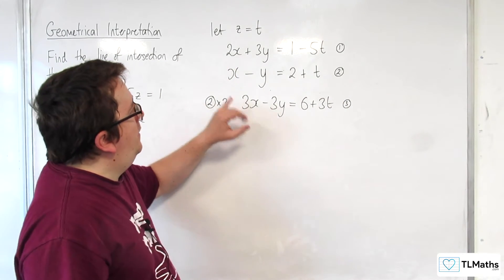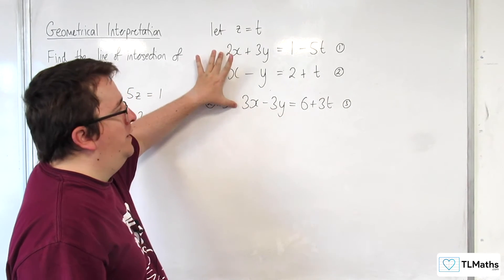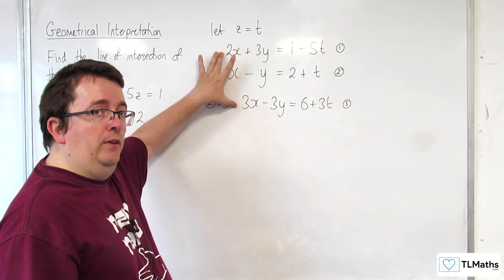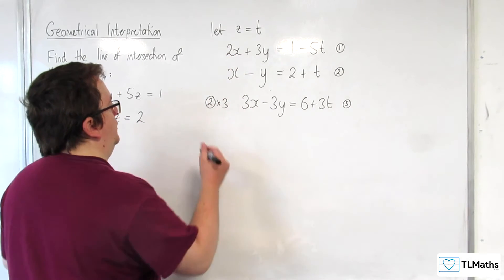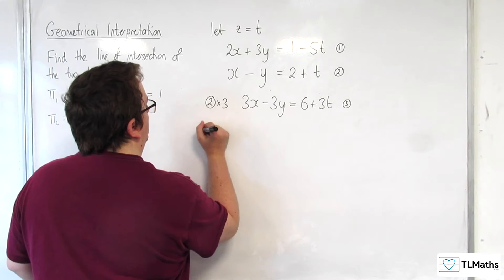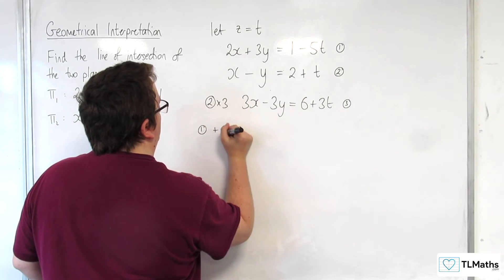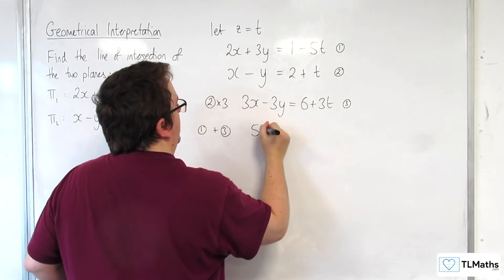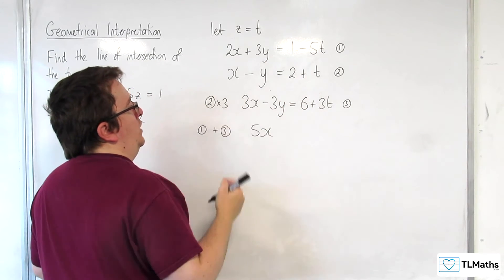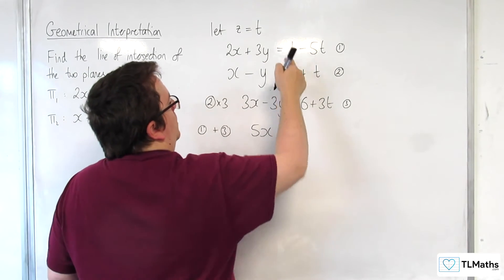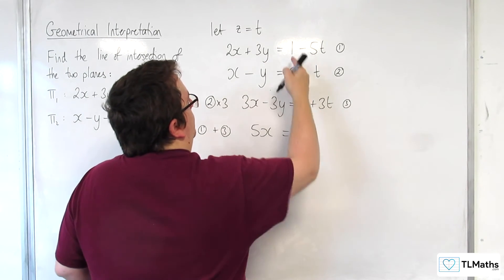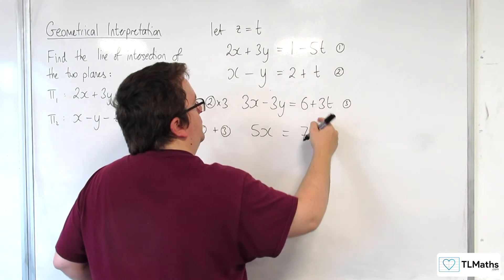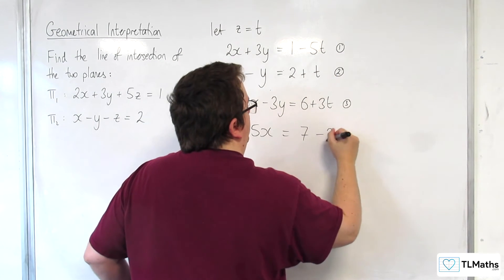Now I can add equation 1 and equation 3 together to eliminate the 3y's. Adding 1 plus 3: we get 2x plus 3x which is 5x. The 3y minus 3y cancels — gone. 1 plus 6 is 7. Minus 5t plus 3t is minus 2t.